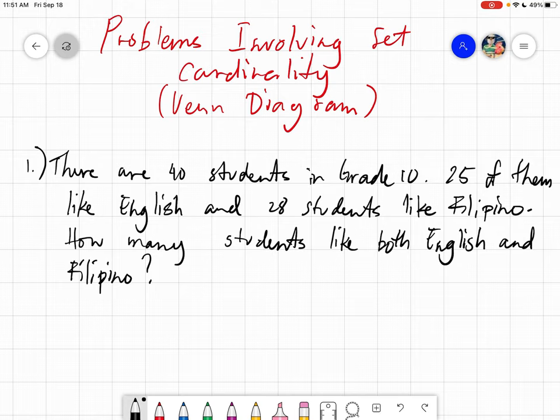So when we talk about set cardinality, we are not very specific about the elements of the set. We are just discussing about how many they are. So for example,